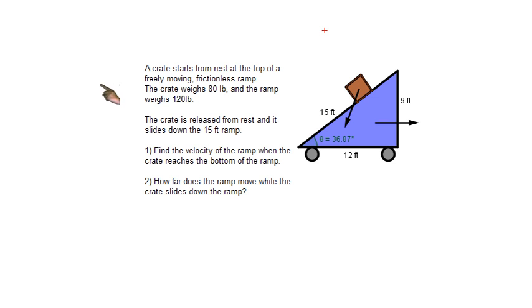A crate starts from rest at the top of a freely moving frictionless ramp. The crate weighs 80 pounds and the ramp weighs 120 pounds. The crate is released from rest and it slides down the 15 foot face of the ramp. Find the velocity of the ramp when the crate reaches the bottom. How far does the ramp move when the crate slides down the ramp?